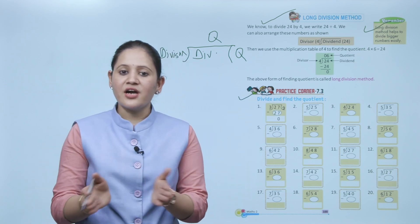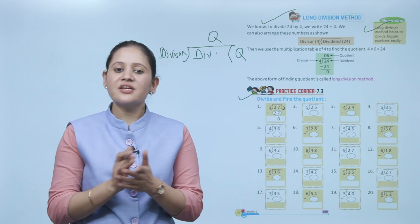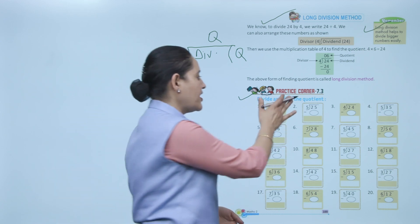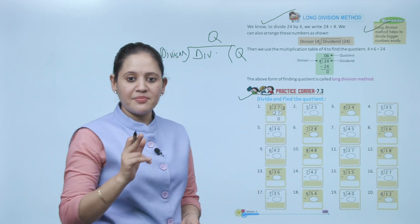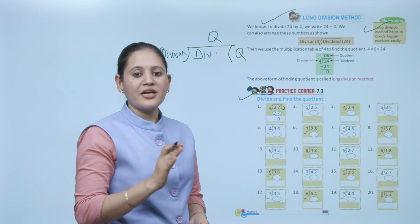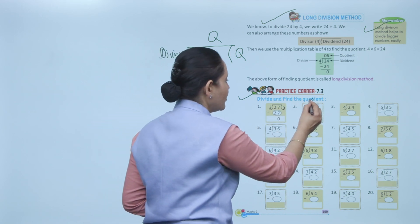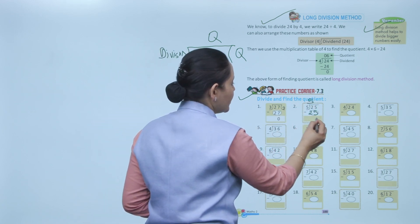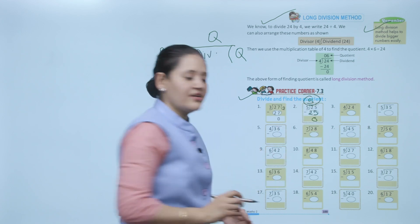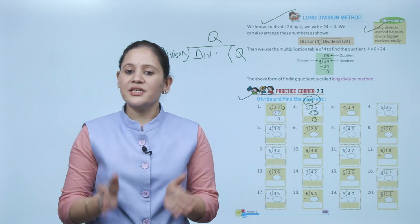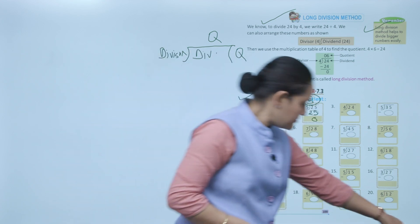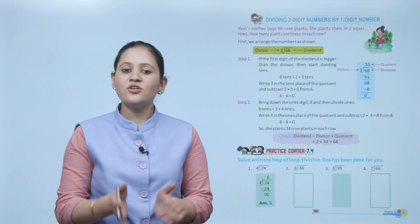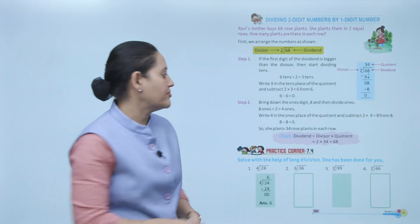Practice corner 7.3 — divide and find the quotient: 27 ÷ 3 = 9. For 25 ÷ 5, in the table of 5 we find that 5 fives are 25, so the quotient is 5. Practice all the questions.